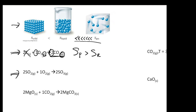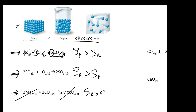Second example: 2SO₂ gas plus 1O₂ gas gives 2SO₃ gas. Which side has larger entropy — reactant or product? The entropy of the reactant is larger than the entropy of the product. For the third example, you can cross out the solid form. The entropy of the reactant is also larger than the entropy of the product. If you know the concept, you're fine.